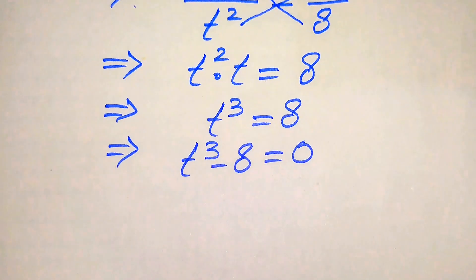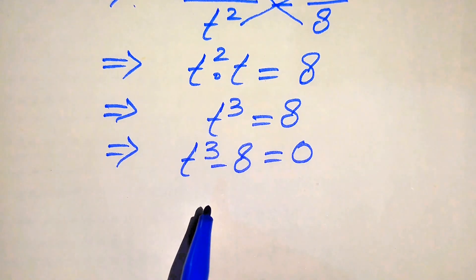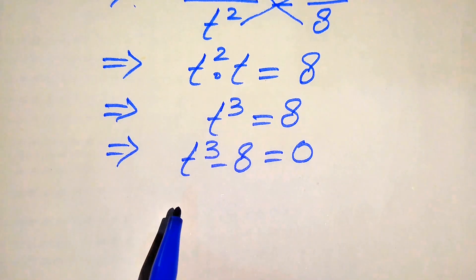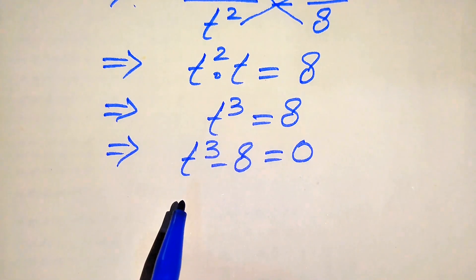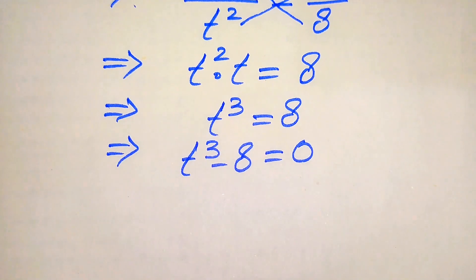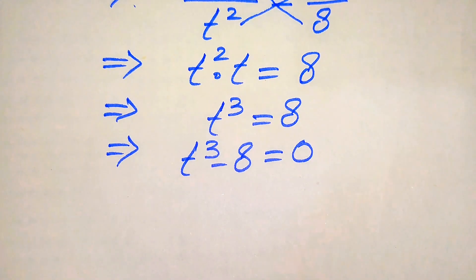This equation becomes a cubic equation in t, and since the degree is 3, it has 3 roots. In the next step we find all three roots of this equation.